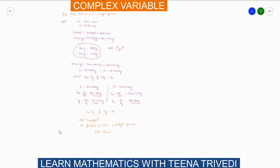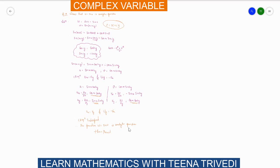To summarize: to show that w = sin(z) is analytic, first substitute z = x + iy, separate using the sin(a+b) formula, apply the circular-hyperbolic relations, separate u and v, then apply and verify the CR equations. Since the CR equations are satisfied, the function is analytic. Thank you so much — I hope you understood this question, and we will solve more questions in the next video.